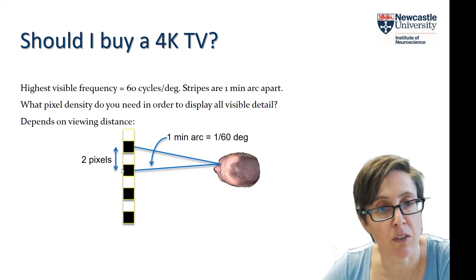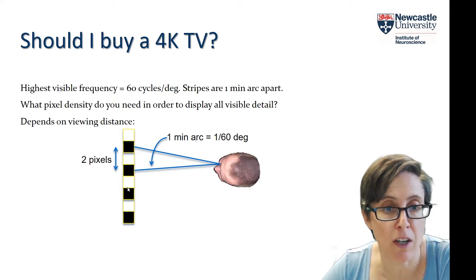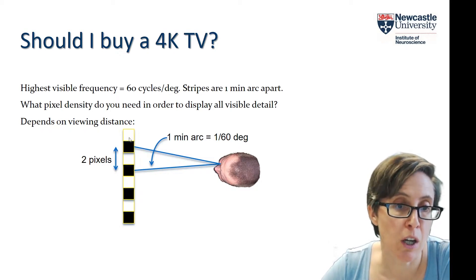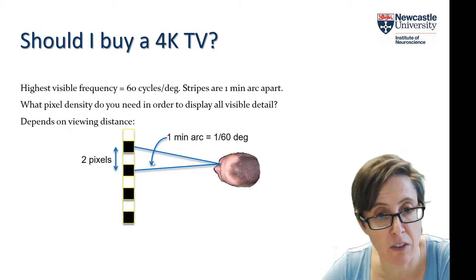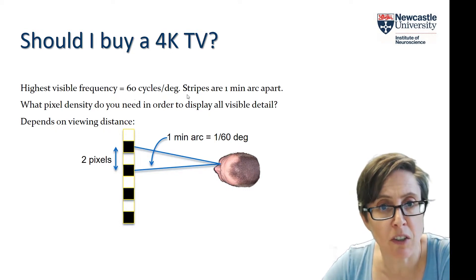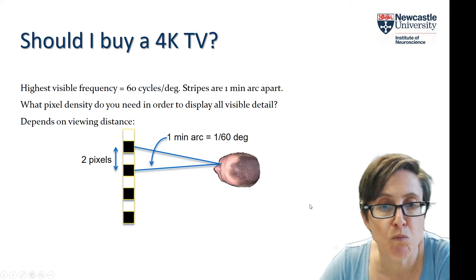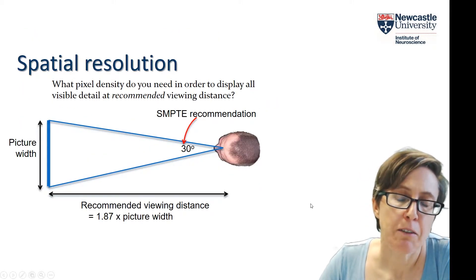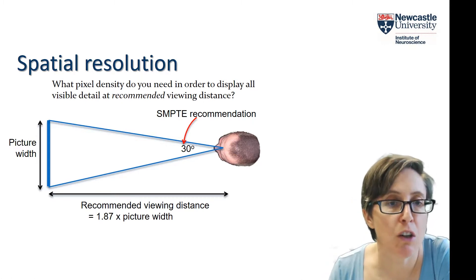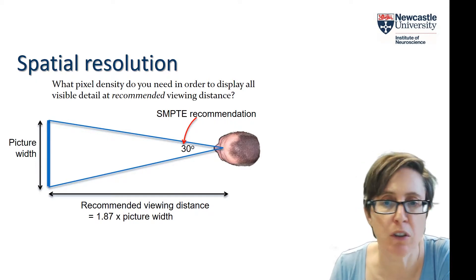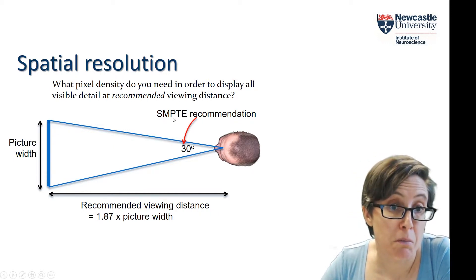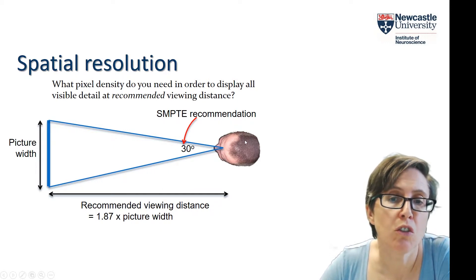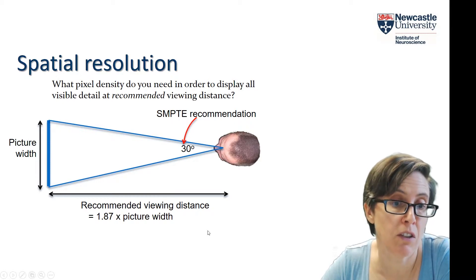What pixel density do you need on your television to display all the detail you can see? That obviously depends on viewing distance. The finest detail you can depict goes from white to dark in one pixel, so a cycle is two pixels wide. Since my visual acuity is 60 cycles per degree, these two pixels must subtend one minute of arc, or one sixtieth of a degree. The Society of Motion Picture and Television Engineers recommends sitting at a distance from which your screen subtends 30 degrees, and it turns out the SMPTE recommended viewing distance is 1.87 times the screen width.